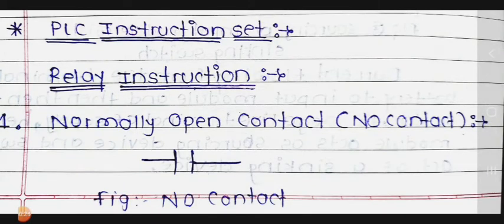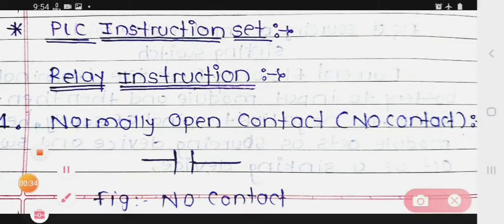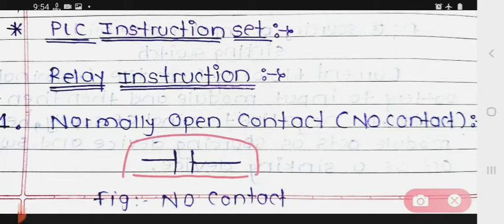The first relay instruction is the Normally Open contact. The symbol for this is shown here. This is called the NO contact. We will see its description.